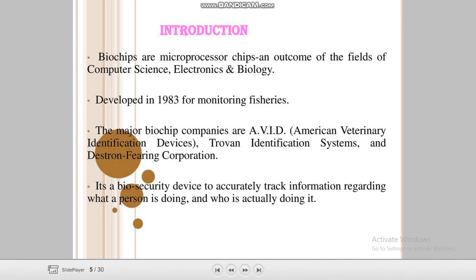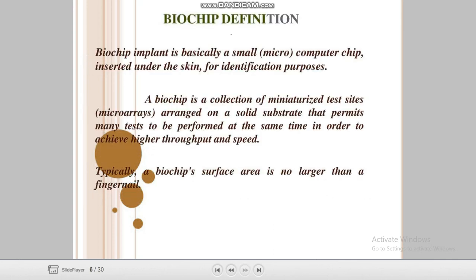The biochip was developed in 1983 for monitoring fish. The major biochip companies are AVID — American Veterinary Identification Devices — Trovan Identification System, and Destron Fearing Corporation. It is a biosecurity device to accurately track information regarding what a person is doing.